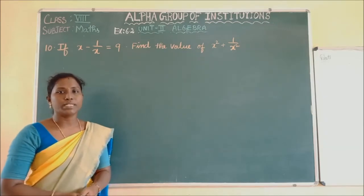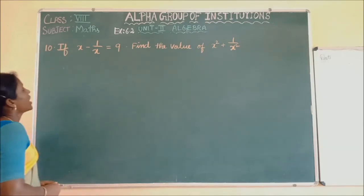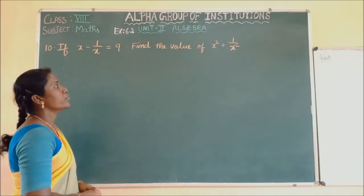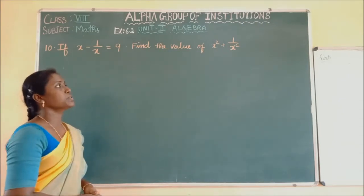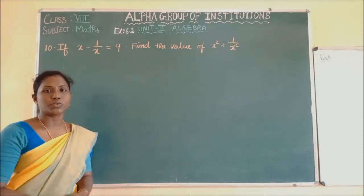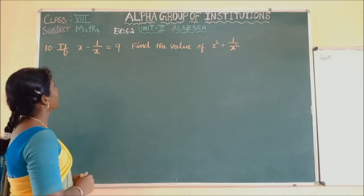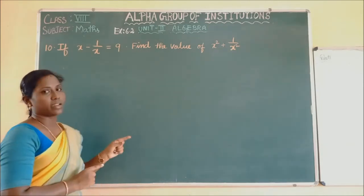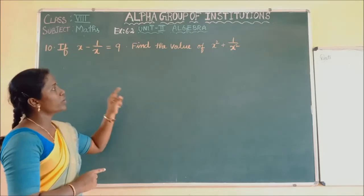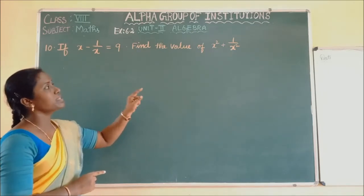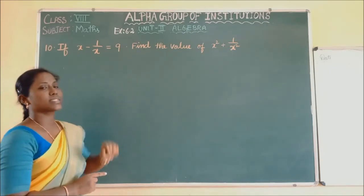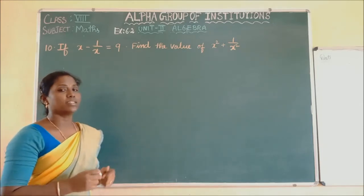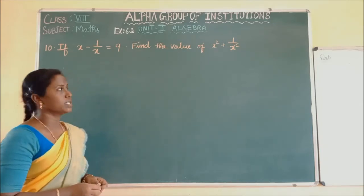Now see the 10th problem: if X minus 1 by X is equal to 9, find the value of X square plus 1 by X square. They gave X minus 1 by X equals 9 and using that we are going to find the value of X square plus 1 by X square using identities.